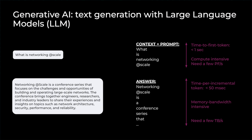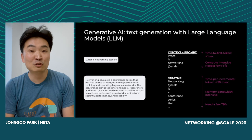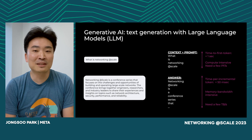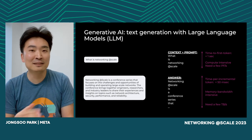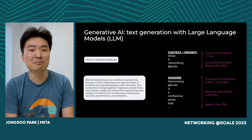LLM inference is a very interesting problem for system design. For good user experience, we typically care about two latency metrics. The first is time to first token — we don't want users to wait too long until they see the first response, typically wanting it under one second. The second is time per incremental token — once we start generating tokens, we don't want them too slow, typically wanting less than 15 milliseconds per token.